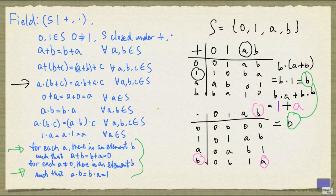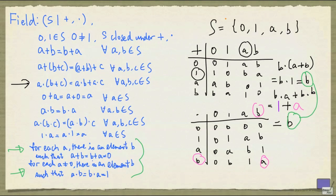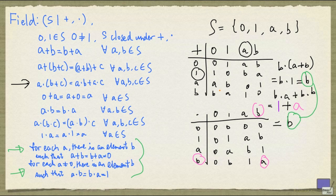So once you have checked all the details, this structure with this set and plus and times defined this way gives us a field. Since there are only a finite number of elements, we call this a finite field. That's very unlike the rational numbers, because the set of rational numbers is infinite.